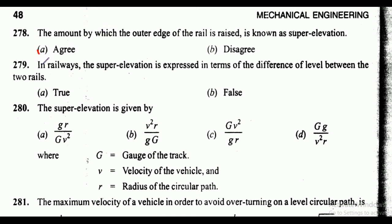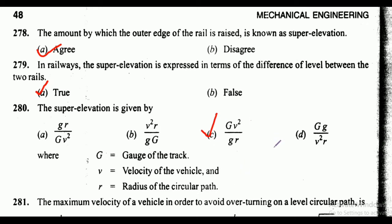Question 278: the amount by which the outer edge of the rail is raised is known as super elevation — agree or disagree? The answer is agree. Question 279: in railways, the super elevation is expressed in terms of difference of level between the two rails — true or false? It is true. Question 280: the super elevation is given by gv square upon gr, where g is gauge of the track, v is velocity, and r is radius of circular path.